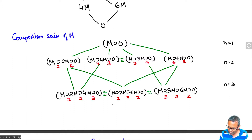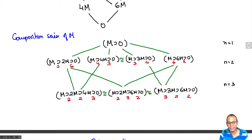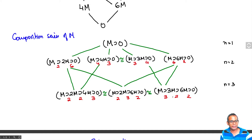Given any two composition series, for example you could take the series with quotients 2 and 6, and these two series have a common refinement. Whereas if you take the first and third series in the second row — M ⊃ 2M ⊃ 0 and M ⊃ 3M ⊃ 0 — they do not have a common refinement. However, they both have refinements which are equivalent, and that's basically the content of Schreier's theorem.